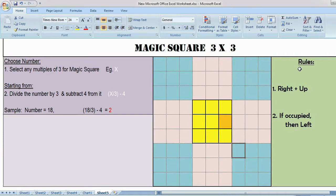Coming to the rules section, there are two rules. One is right plus up. That means if you are in this position, then right and up, the next number should be placed here. If you are in this position, then right plus up, this is the position the next number should come.